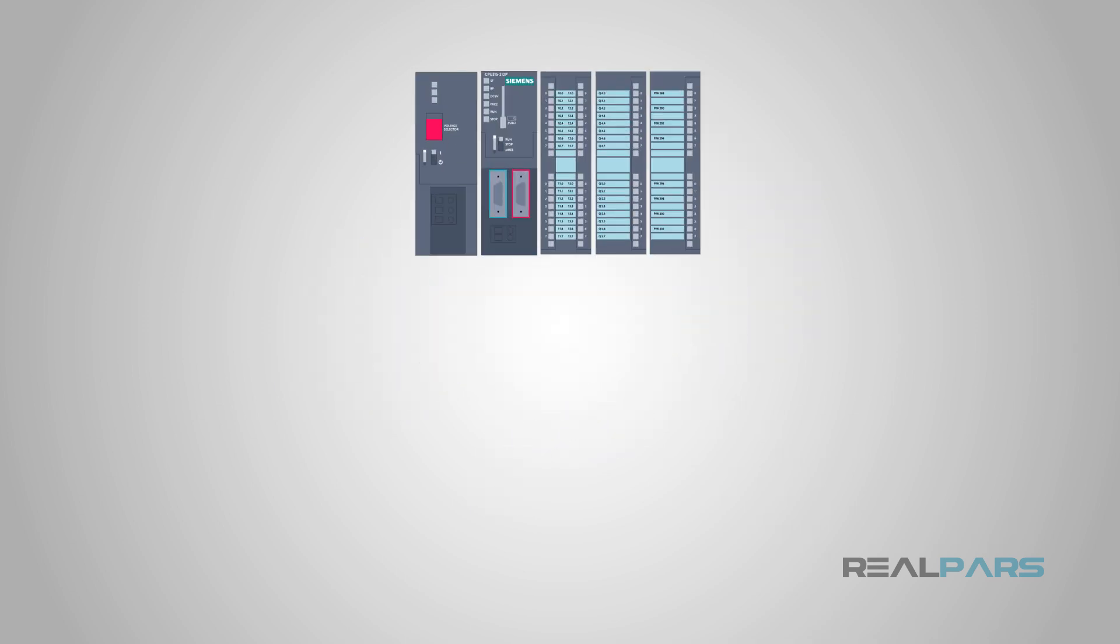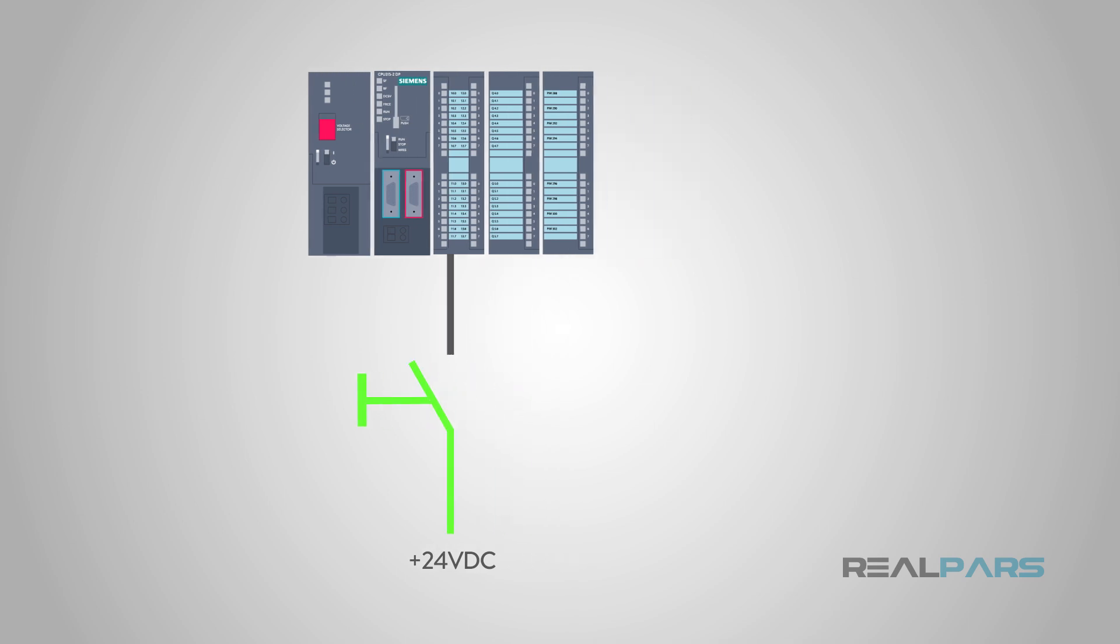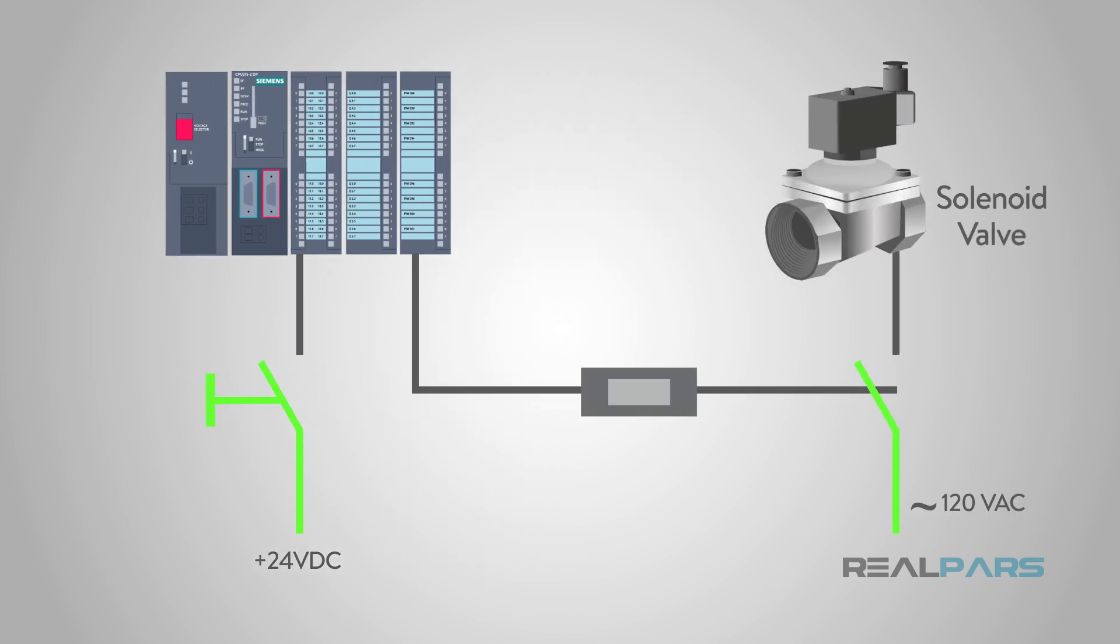Industrial automation works exactly the same way. Each industrial process needs to be started by some sort of input. That input can be a sensor, push button, switch, among many other possibilities. Typically, a person will start the process with one of these input devices, or it could be a sensor that detects an object automatically.